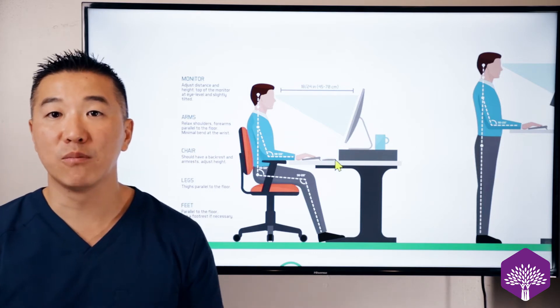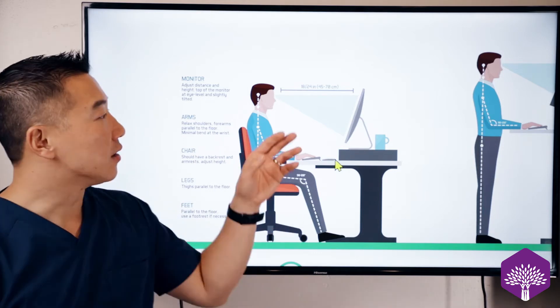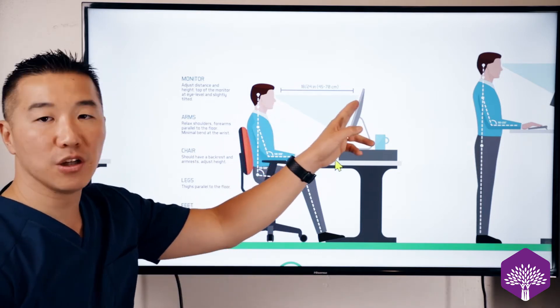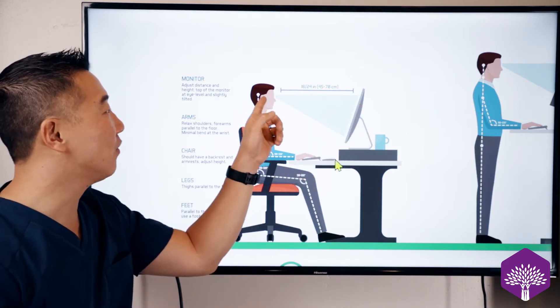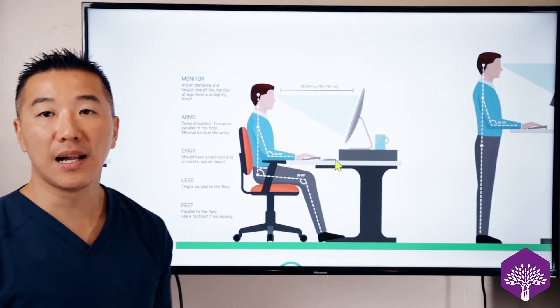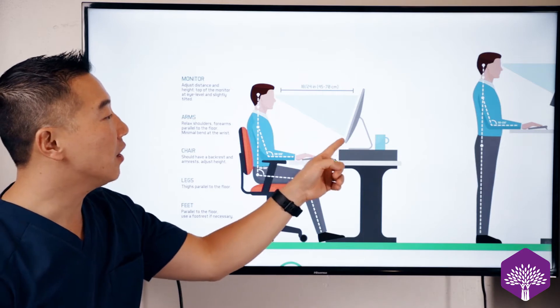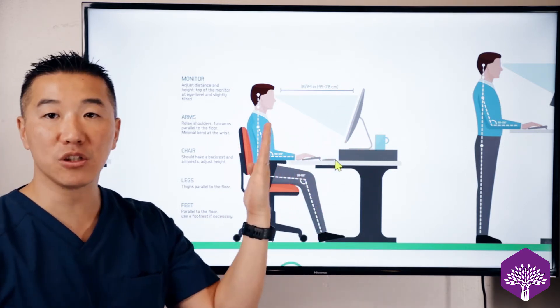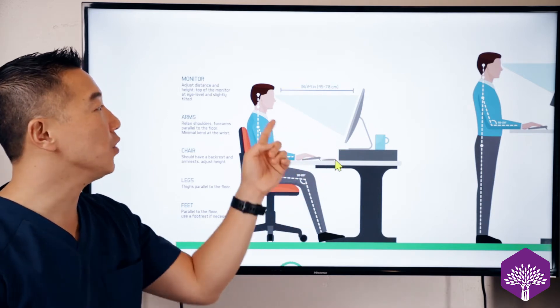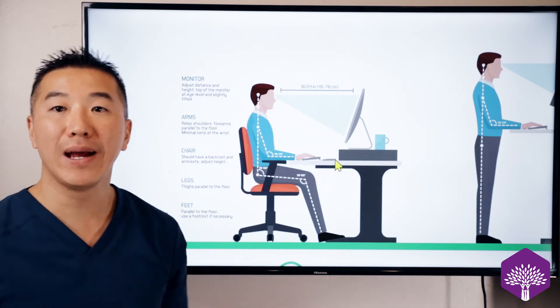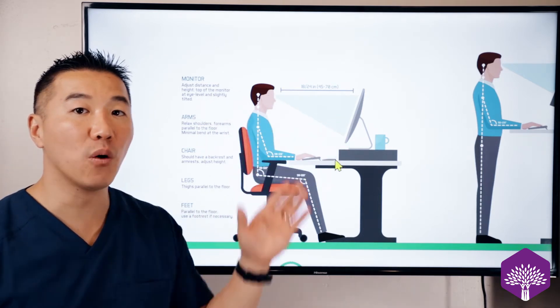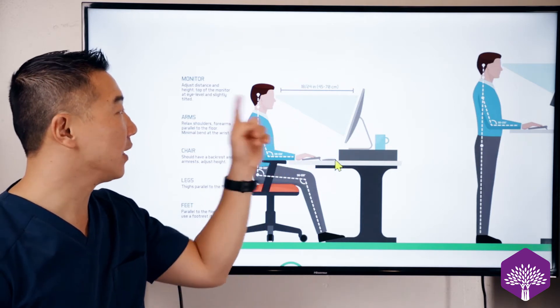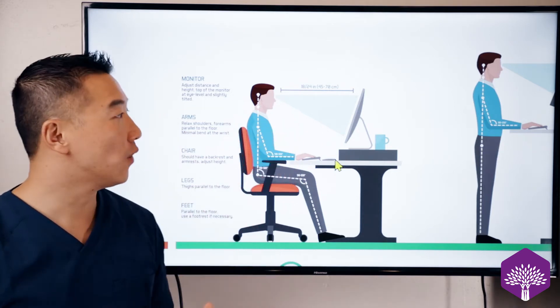Moving forward, people ask me, Dr. Tam, where should my screen be? The top two inches of your screen should be at eye level. As you can see, it should be at eye level. The bottom of the screen should be tilted towards you. The top should be tilted slightly away from you. You should be around 18 to 24 inches away from your screen right here, looking straight forward.